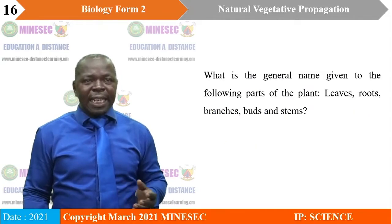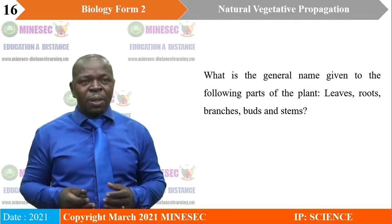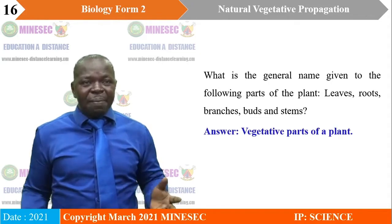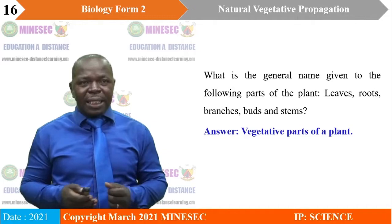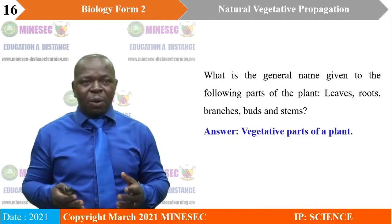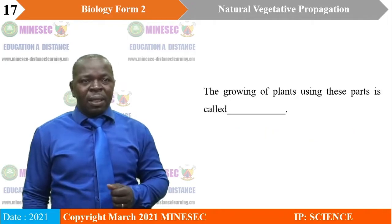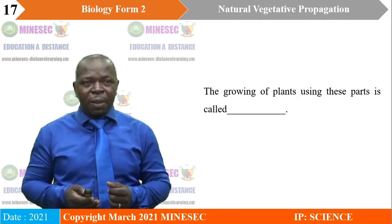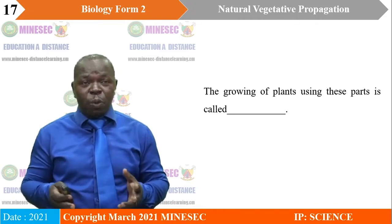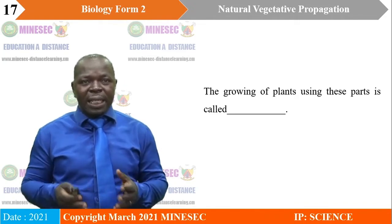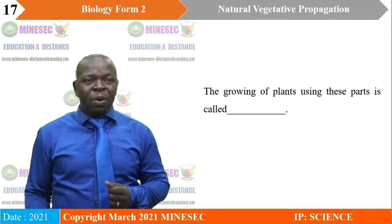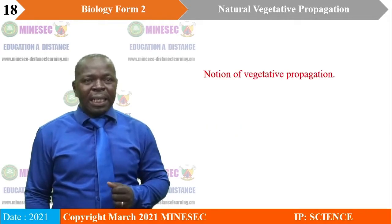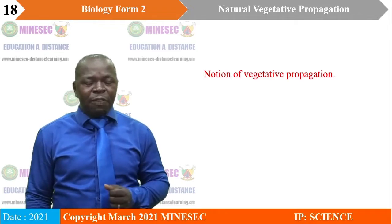So, A is a leaf, B is a rhizome — an underground stem of ginger — and C is a tuber, a swollen root. The general name given to these parts of plants — leaves, roots, branches, buds, and stems — is vegetative parts of a plant. The growing of plants using these vegetative parts is called vegetative reproduction or vegetative propagation. That leads us into our topic: the notion of vegetative propagation.